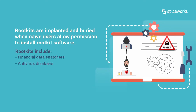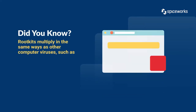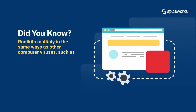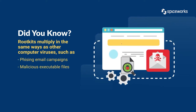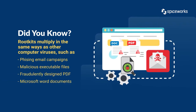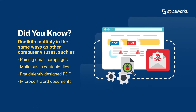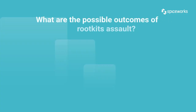Rootkit software includes financial data snatchers, antivirus disablers, keyloggers, password stealers, and bots for distributed denial of service attacks. Rootkits propagate in the same way as other computer viruses, such as through phishing email campaigns, malicious executable files, fraudulently designed PDF or Microsoft Word documents, connecting to damaged shared folders, and installing rootkit-infected software from infected sites.